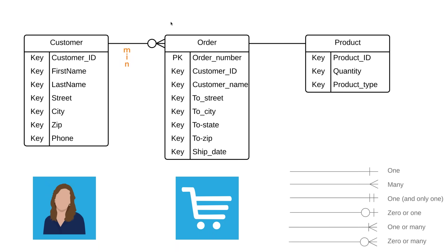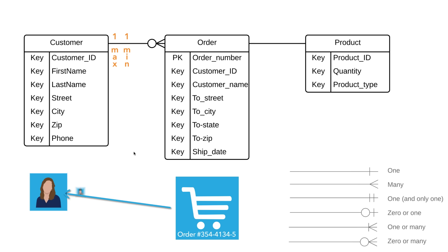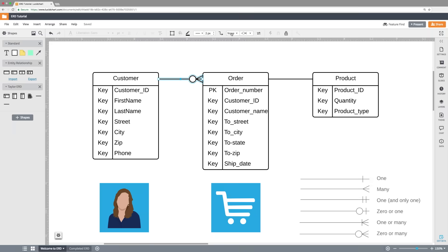Now let's talk about the minimum and maximum relationship between orders and customers. We ask ourselves the same questions: what is the minimum number of customers an order may have, and what's the maximum? A specific order can only have one and only one customer — you can imagine the confusion if the same order had lots of customers. So in this case we show one and only one using this notation here.